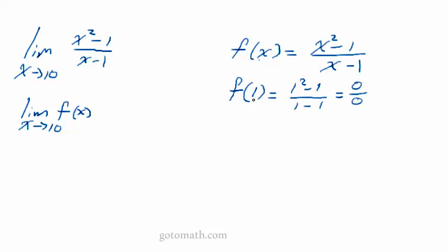Getting 0 over 0 means there's a hole in the graph — a missing point. It also means that 1 is not in the domain. We can't use 1; when we use 1, this thing breaks down. So we don't know where that actual hole is. There's a missing point and when we go to plug 1 in, we don't get anything out.